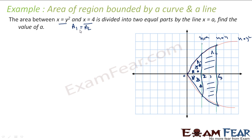Since A1 = A2, by symmetry about the x-axis, we also have A1/2 = A2/2. So instead of computing the full areas, we can just find the upper-half areas and equate them. A1/2 is the upper portion from x = 0 to x = a under the curve, and A2/2 is the upper portion from x = a to x = 4.